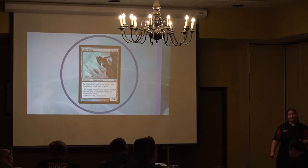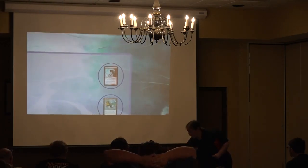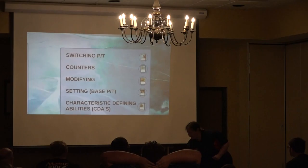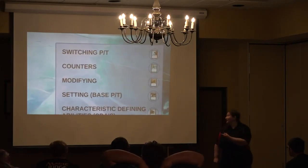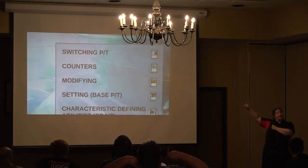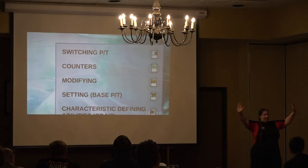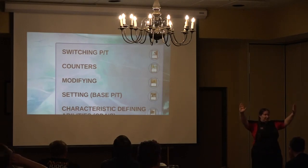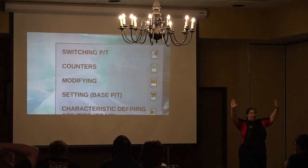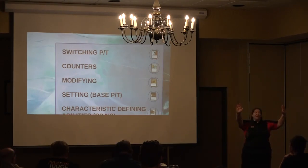If you have something that gives all your creatures +1/+0, which layer does that apply in? Modifying. So first we're modifying — getting +1/+0. Here's your power, here's your toughness: +1/+0. So if it started out as a 2/2, now it's a 3/2. The enchantment's in play, so that makes it a 3/2. Then look at counters — no counters. Switching — we've got a 3/2, so now we have a 2/3.